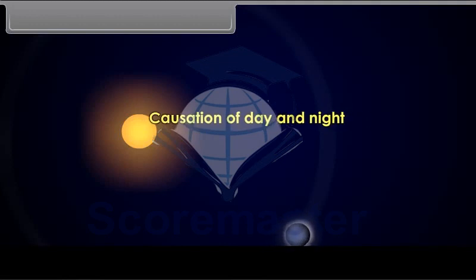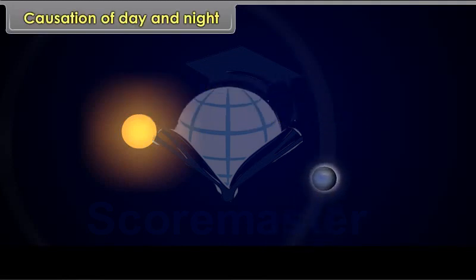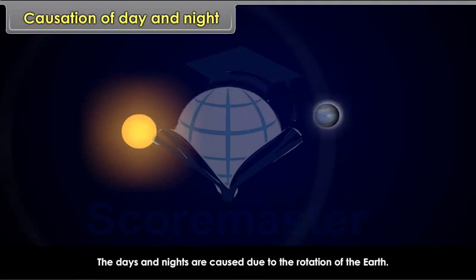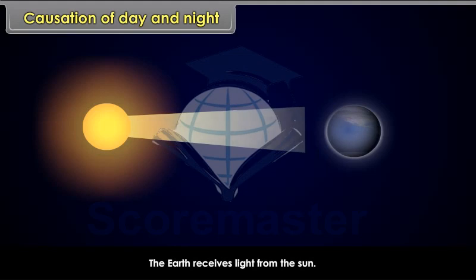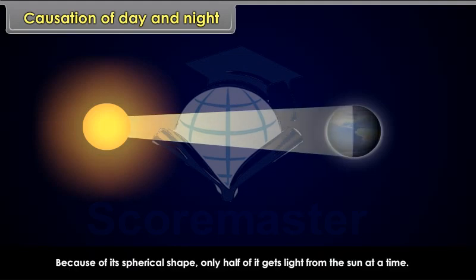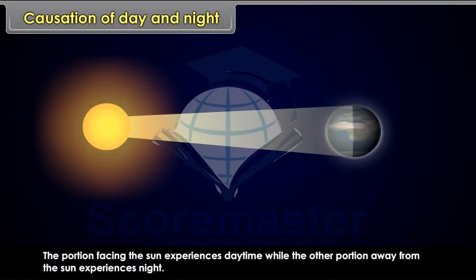Causation of day and night. The days and nights are caused due to the rotation of the earth. The earth receives light from the sun. Because of its spherical shape, only half of it gets light from the sun at a time. The portion facing the sun experiences daytime while the other portion away from the sun experiences night.